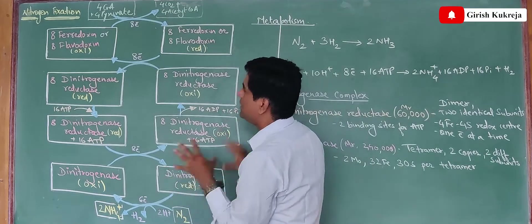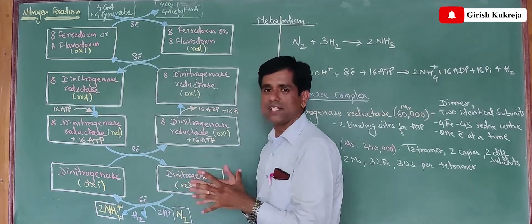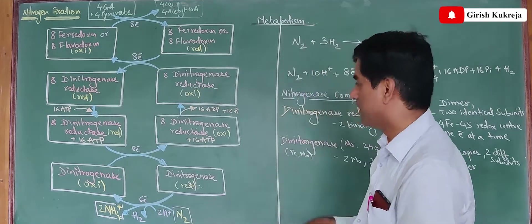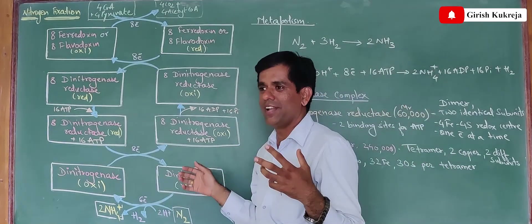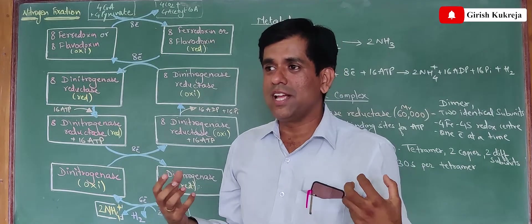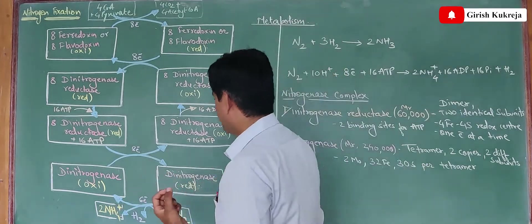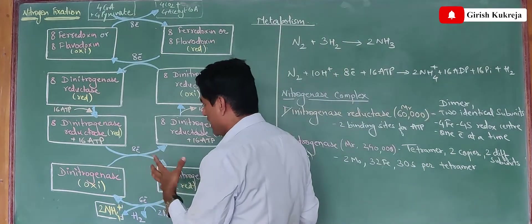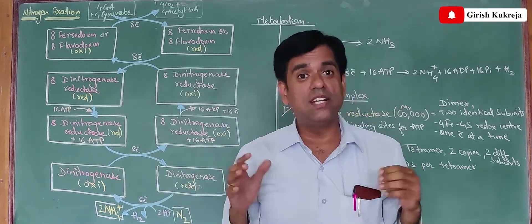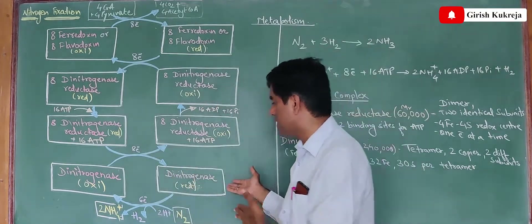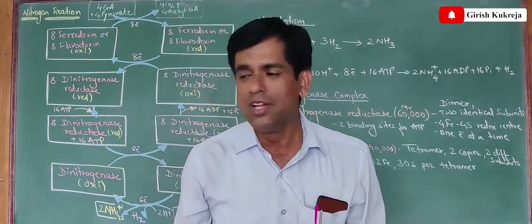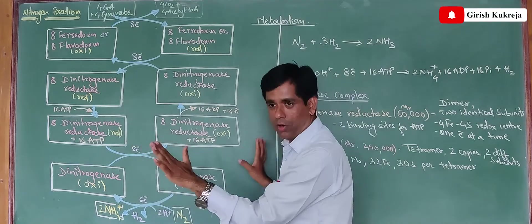One major challenge which this entire mechanism faces is that of oxygen. We study oxygen as the gas which gives life, but here this gas is not good for the nitrogenase complex. The dinitrogenase reductase has a half-life of around 30 seconds in oxygen, and dinitrogenase has a half-life of around 10 minutes. So once oxygen is in the picture, the entire process is totally gone.